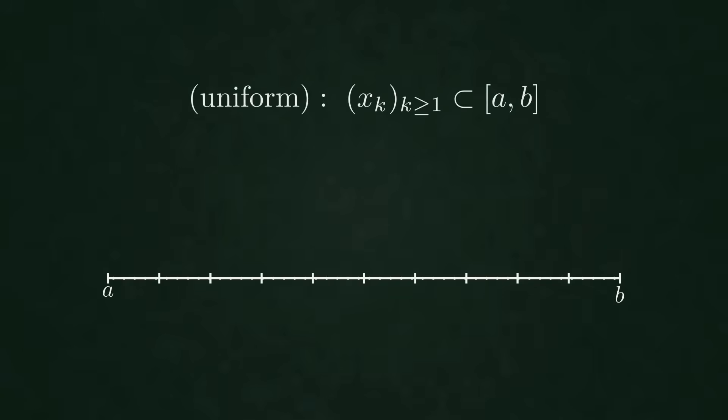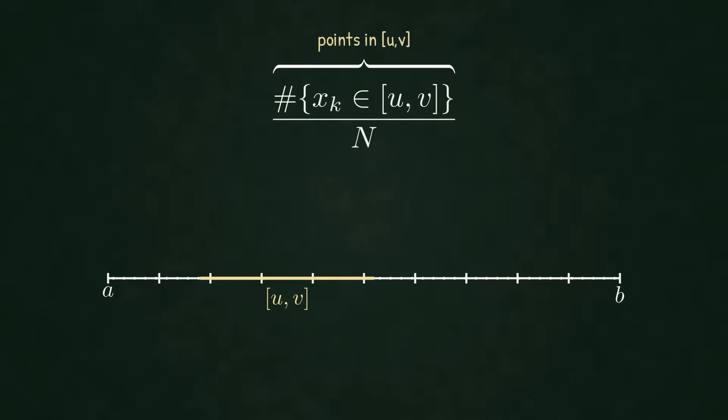So we take a sequence of points xk inside the interval between a and b. And we look at how it spreads across this interval. And now we choose a sub-interval between u and v. And among the first n points, we count how many land inside the sub-interval.